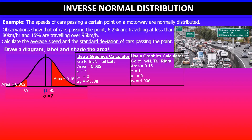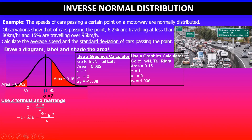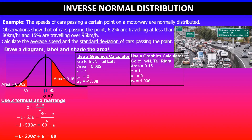Now that we have the two z-values, we'll use the z-formula and rearrange. The formula is z = (x − mean) / standard deviation. The first z-value, negative 1.538, corresponds to x = 80: so negative 1.538 = (80 − mean) / standard deviation. Rearranging by multiplying both sides by the standard deviation and moving the mean term gives: negative 1.538 × SD + mean = 80. This is our first equation.